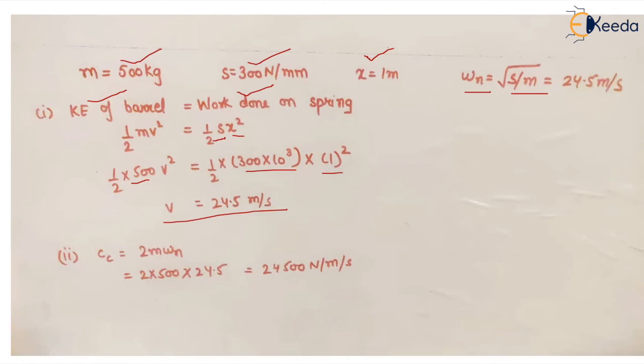And to find the critical damping coefficient, which is cc, it is equal to 2m into omega n. So it is twice of m is known, omega n is known, so we can find the damping coefficient.